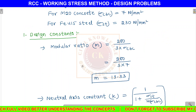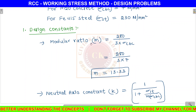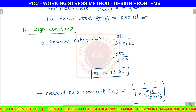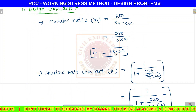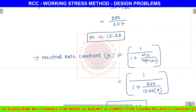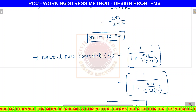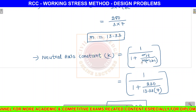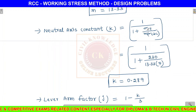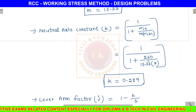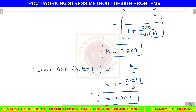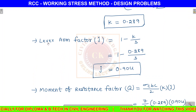Step 1: Design constants. Modular ratio m equals 280 divided by (3 into sigma CBC), so m equals 280 divided by (3 into 7), giving m equals 13.33. Next, neutral axis constant k equals 1 divided by (1 plus sigma st divided by m into sigma CBC).